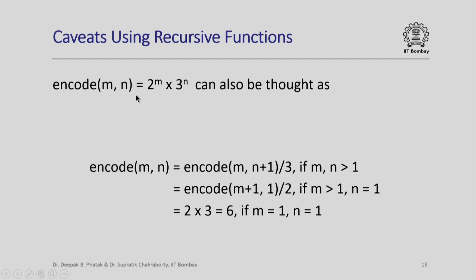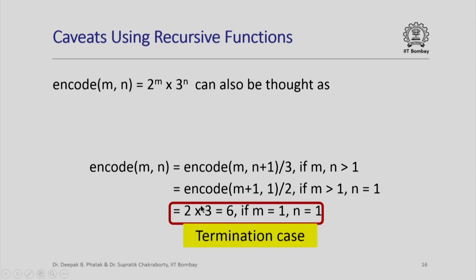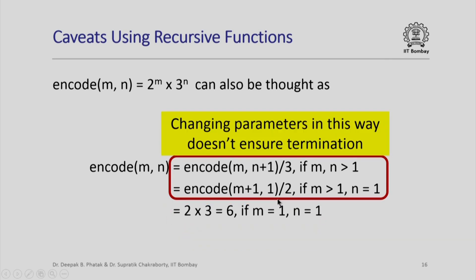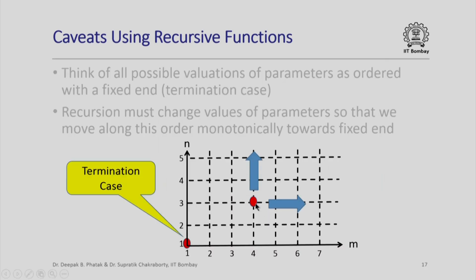The same encode function 2^m × 3^n can also be specified recursively in a different manner — instead of decreasing n, we increase n and divide by 3; similarly, we increase m and divide by 2. These are also recursive formulations with a termination case, but they have a problem: given a value of (m, n), n will continue to increase, or m will continue to increase, and we will never reach the termination case. Although there is a recursive formulation, the parameters are changed in a way that does not ensure termination — this is a bad recursive design. Pictorially, starting from any point you would keep moving away from the termination case.